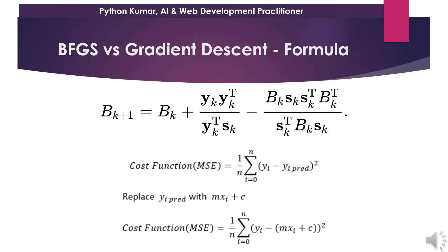Here you can see the formula difference between BFGS and gradient descent. In the formula of BFGS, the variable b notes the point on the curve, and y is the functional value on the curve. In gradient descent, you have the cost function and how you reduce the cost function.